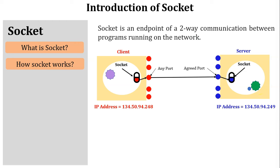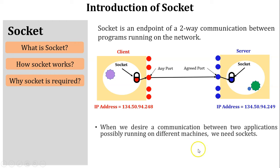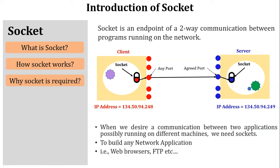This diagram illustrates the working of a socket. Next, why is a socket required? When we need communication between different programs running on the network, a socket is required. In simple words, a socket is required to build a network application — such as web browsers, FTP, etc. — and is used where client-server architecture is used in the network.